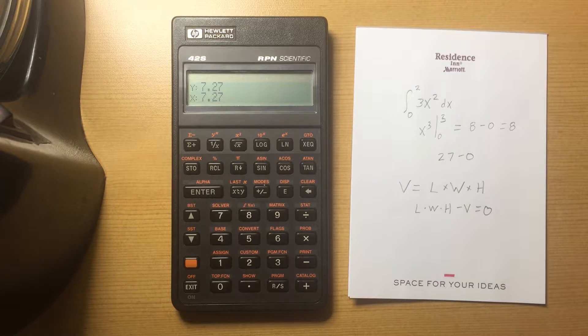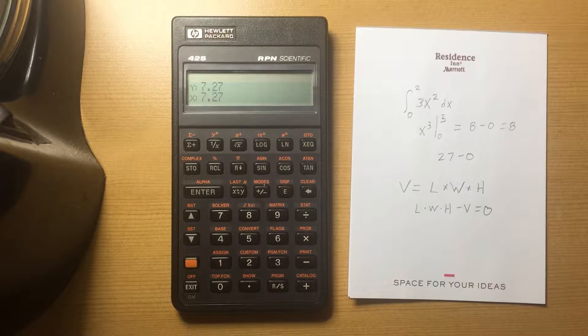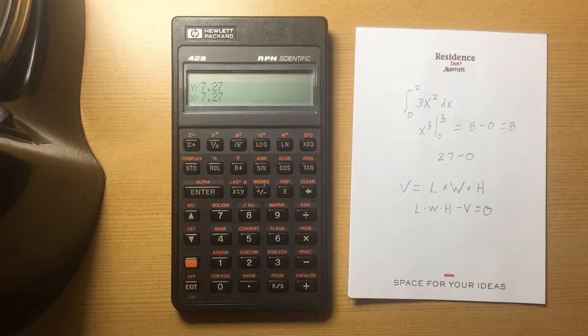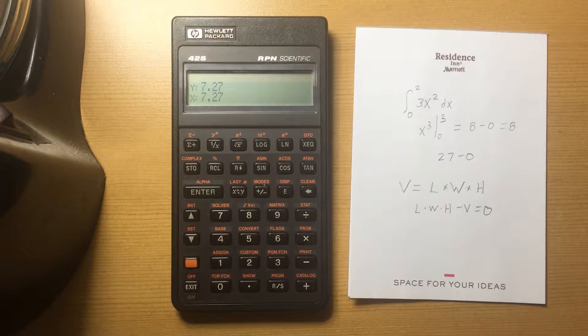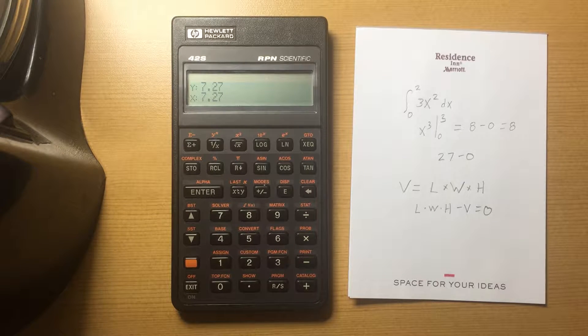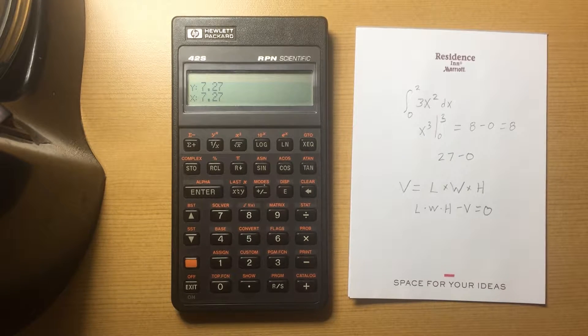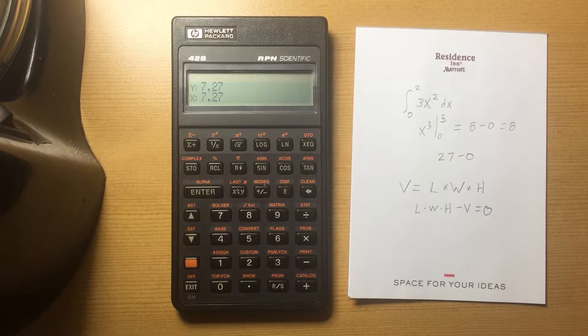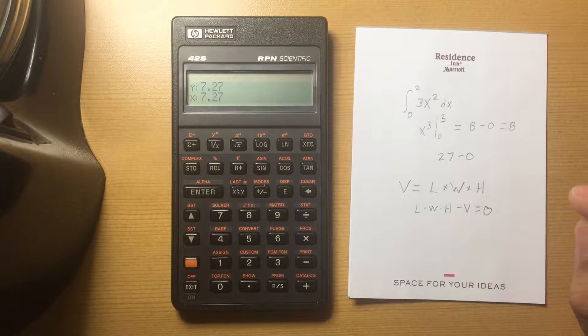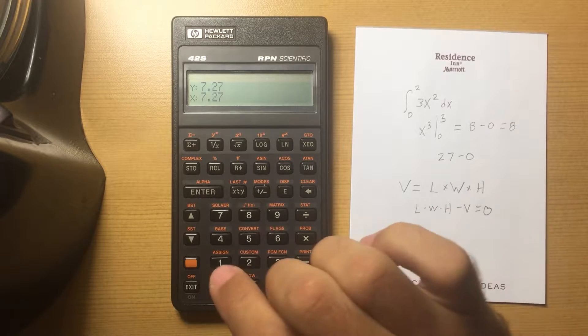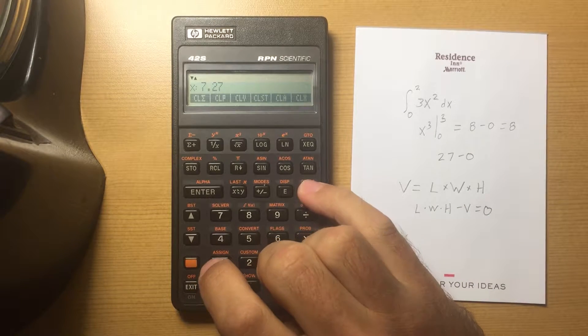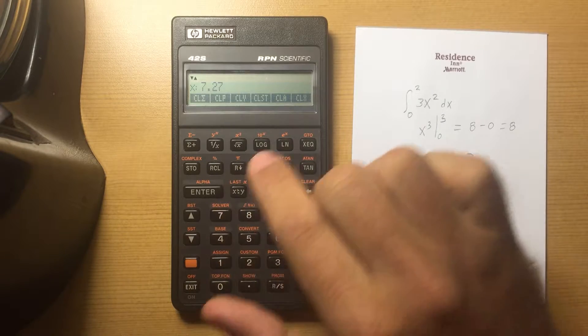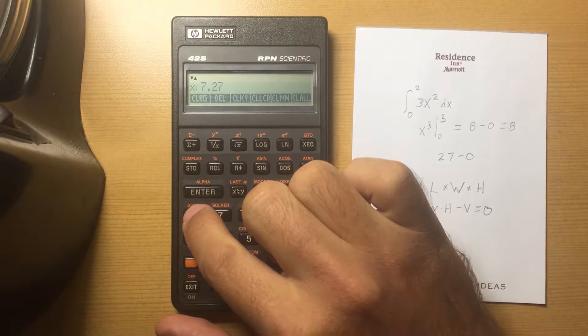I probably should have added this information when I was doing the general usage menus, but the Clear menu is something that I use quite a bit and some of the items in it weren't immediately clear to me. So I wanted to briefly explain it. The Clear menu is right here. There are two rows to it.